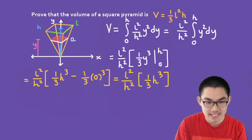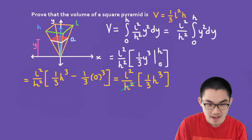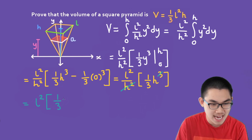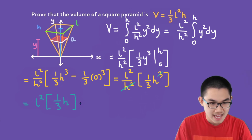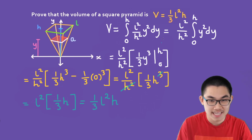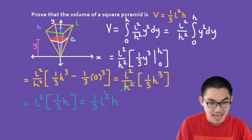We can cancel H² from H³ in the numerator and denominator, leaving us with L² times 1 over 3 times H. This equals 1 over 3 times L squared times the height — the volume formula for the square pyramid.